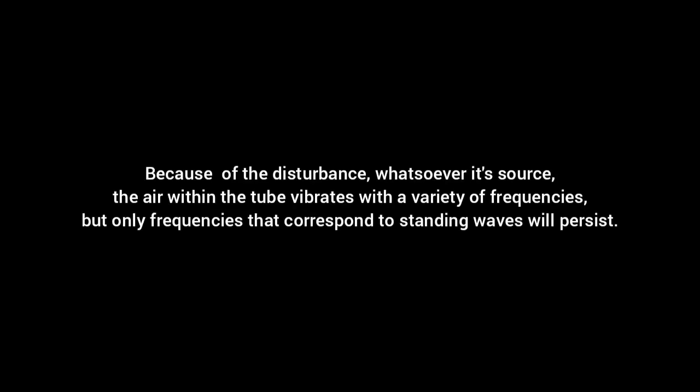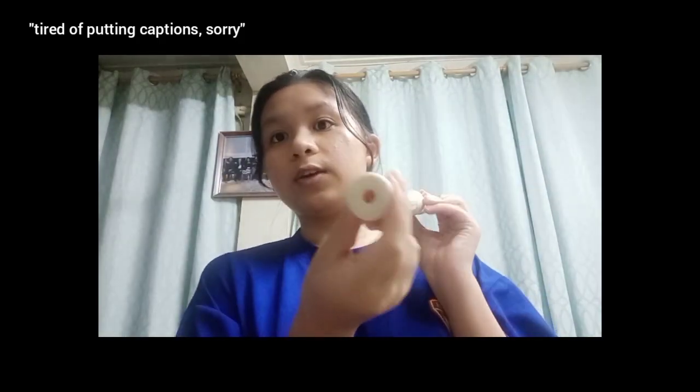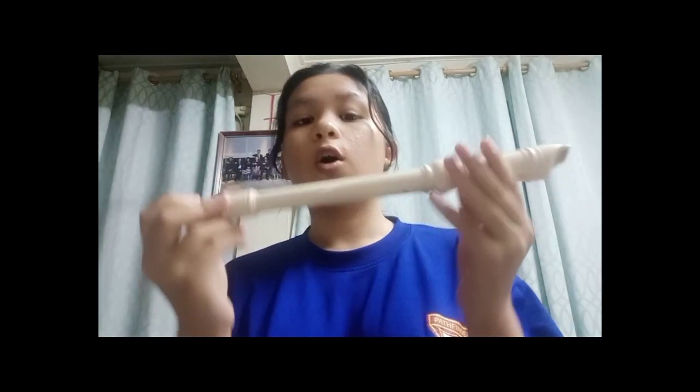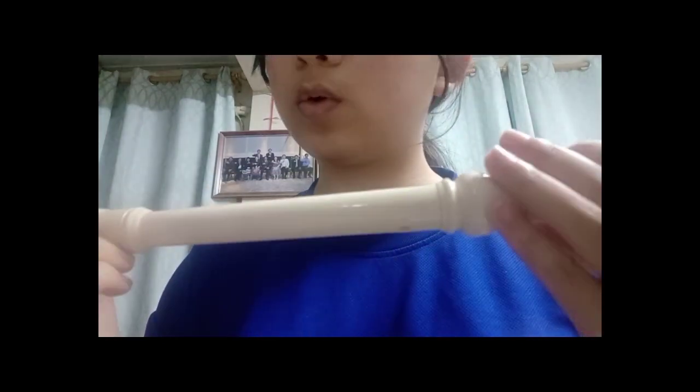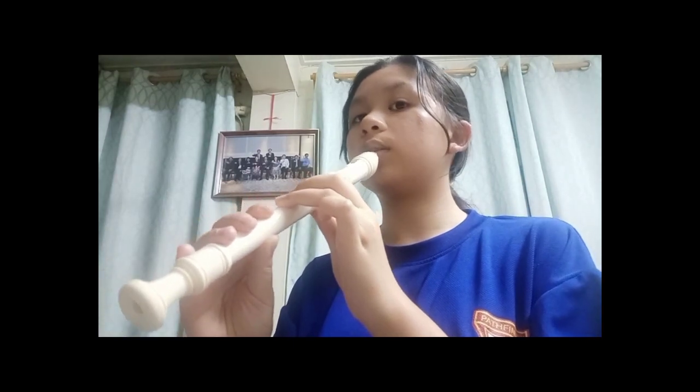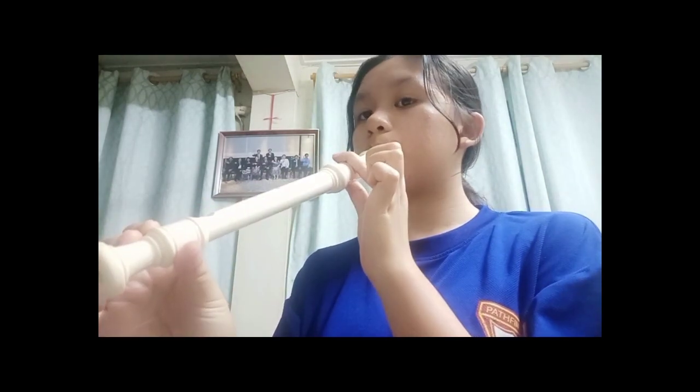Because of the disturbance, whatsoever its source, the air within the tube vibrates with a variety of frequencies, but only frequencies that correspond to standing waves will persist. So the diameter and the length of the tube affects the sound. Also, these are called nodes, which have different sizes to correlate with the sound. If I close all the nodes, it makes a sound. And if I open the nodes, it also makes a sound. And I could make a scale.